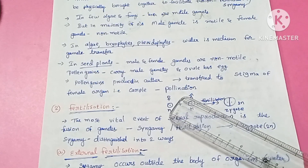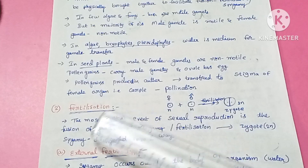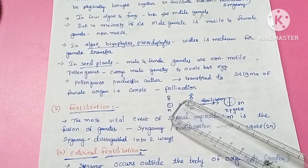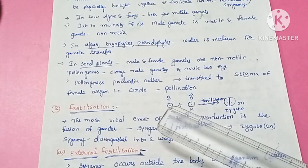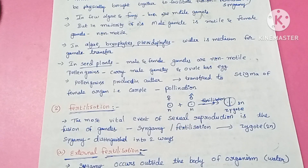Pollination is carried out by agents such as wind, insects, and water. This concludes the topic of gamete transfer. In the next video, we will start with fertilization.